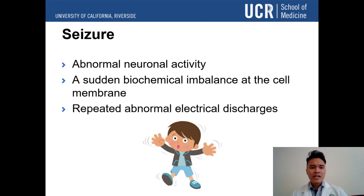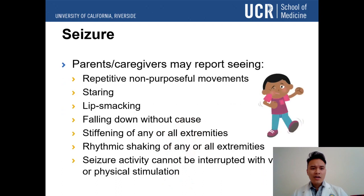But really, seizures are specifically a type of abnormal neuronal activity. In scientific terms, it's a sudden biochemical imbalance at the cell membrane where there are repeated abnormal electrical discharges. Simply put, something is happening at the cell membrane that causes repeated motions.